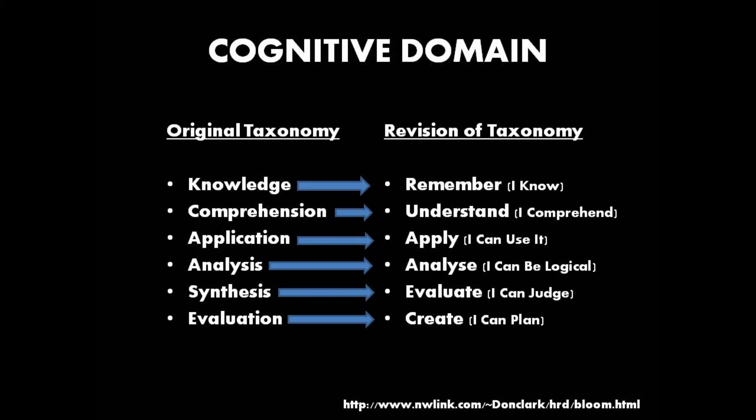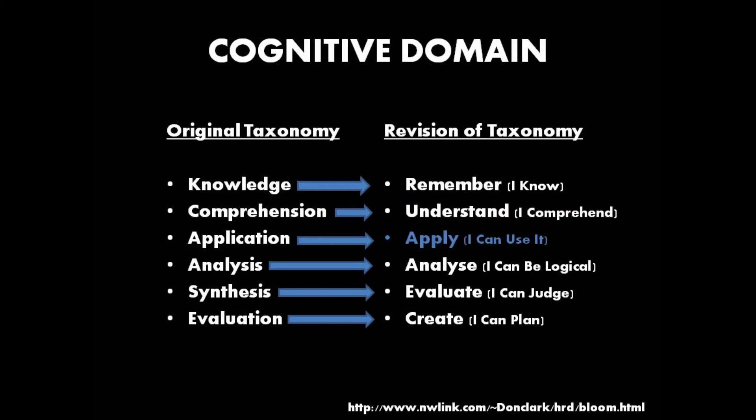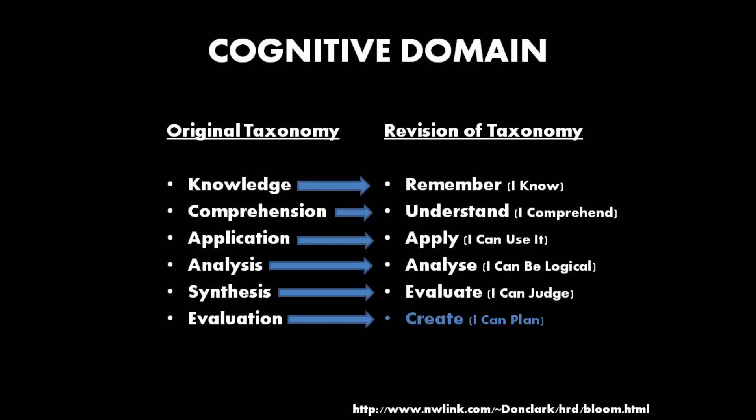45 years after the original taxonomy was formulated, it was revised. Bloom's Taxonomy was still six subgroups and in the same order, but now labelled differently, using only verbs: remember, understand, apply, analyse, evaluate, and create. I will explain all six categories, what verbs can be used when asking your students to show ability, and how they can look or what they can produce in the classroom.